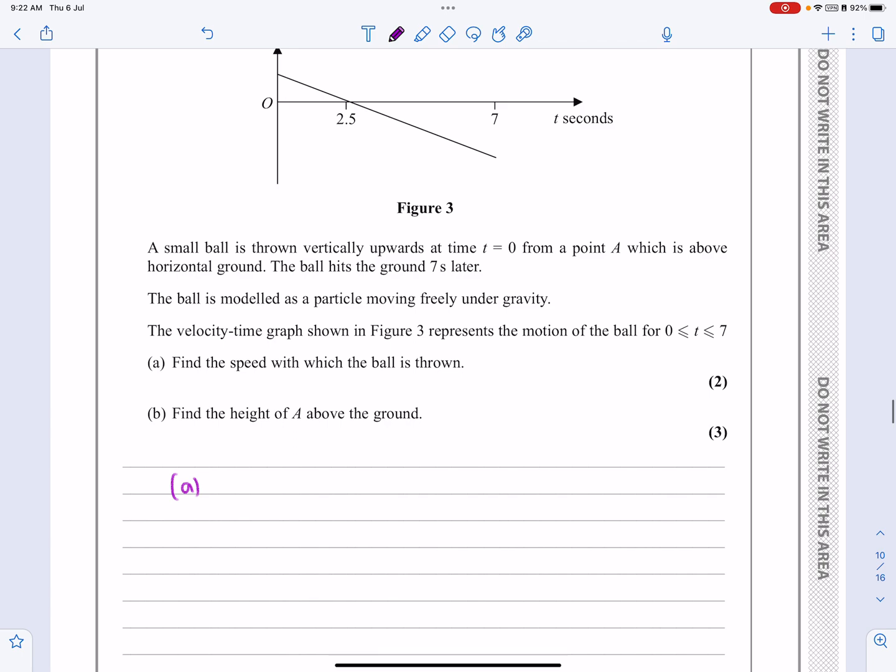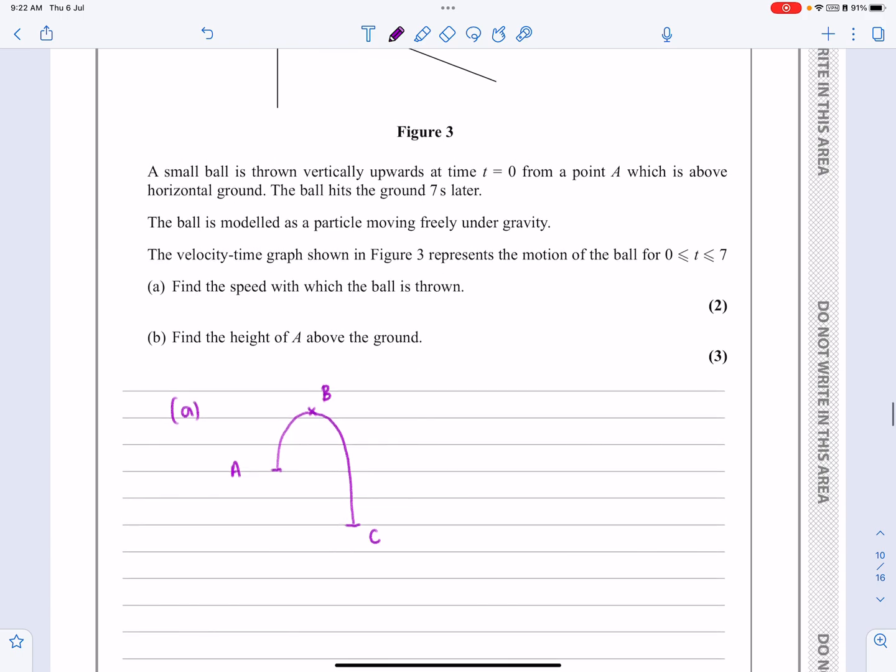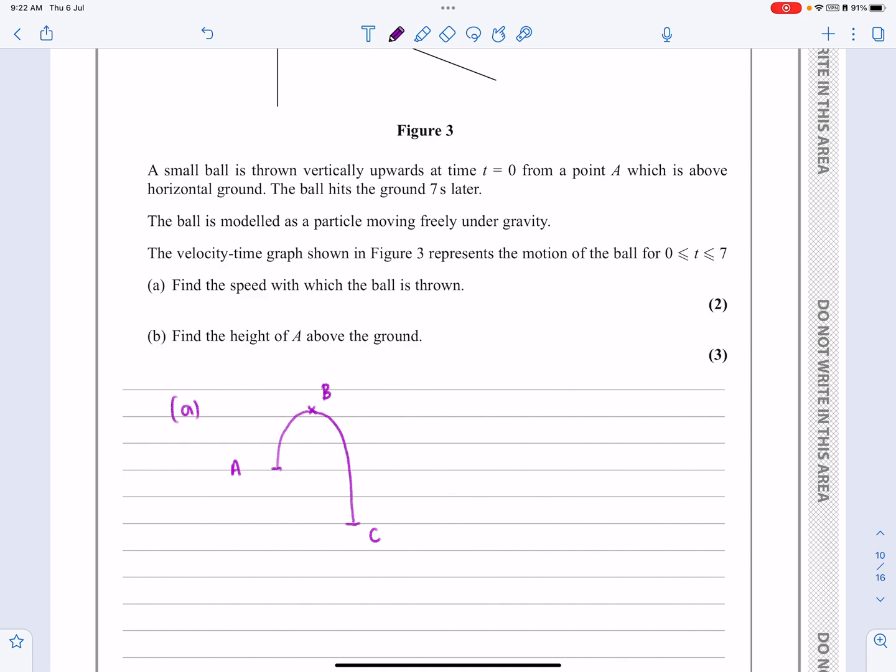So based on what we've got there, my diagram would look something like this. It starts off at point A here. When we've got the velocity equals 0 there, that's equivalent to point B here, which is where it gets to its maximum height. Then it comes down to point C there, and this all takes, well, that would be 0 seconds.